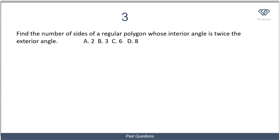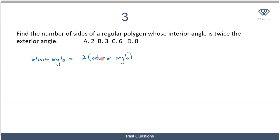In this next question, we are told to find the number of sides of a regular polygon whose interior angle is twice the exterior angle. If you recall, for every polygon the sum of exterior angles is always equal to 360 degrees. The sum of interior angles is given by 180(n minus 2), and this equals two times the exterior angle sum, which is 2 times 360.